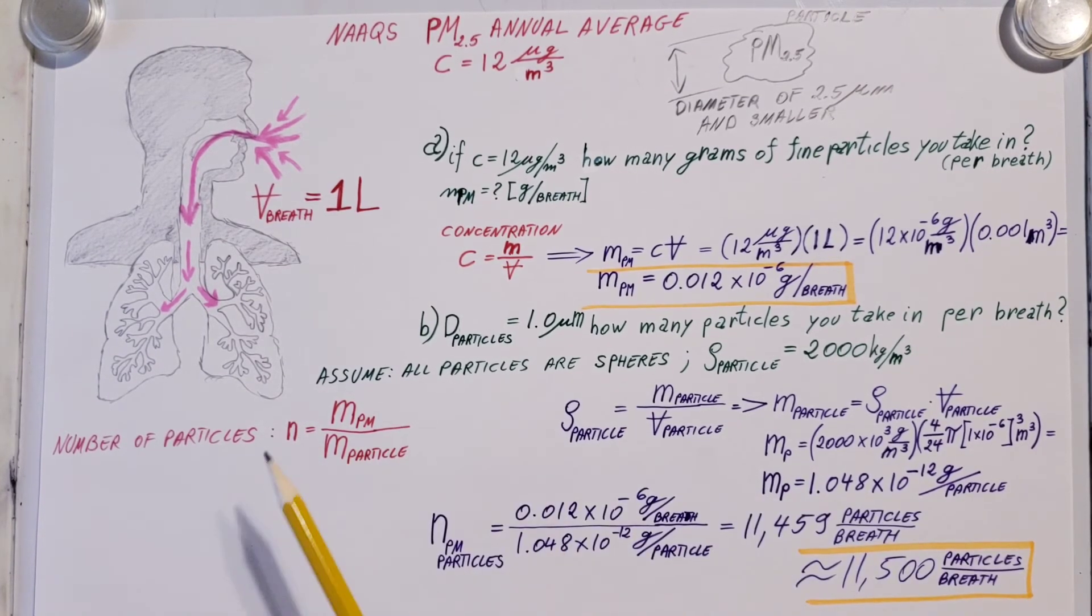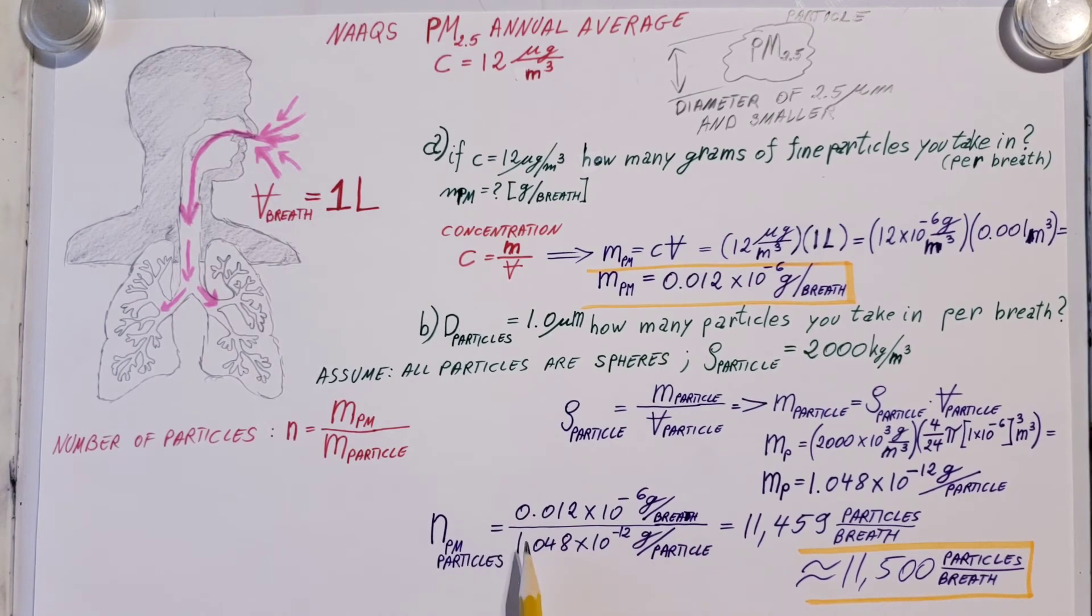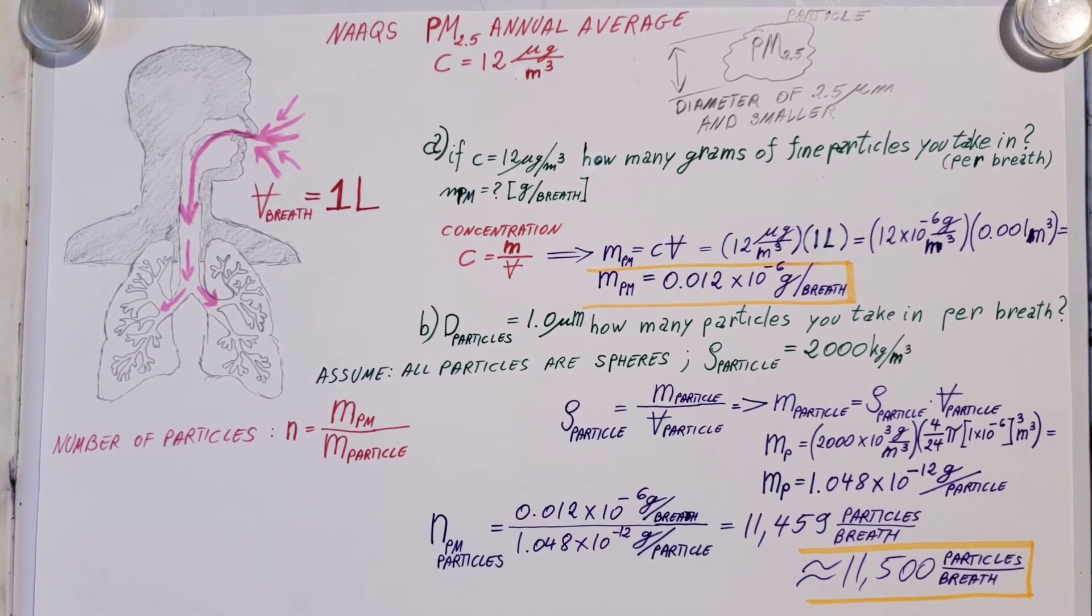Now we can come back to our formula. We can find our number of PM particles: the total mass that we breathe in from here divided by the mass of just one particle. That's going to give us that we're breathing in about 11,459 particles per breath—approximately 11,500 particles per breath.